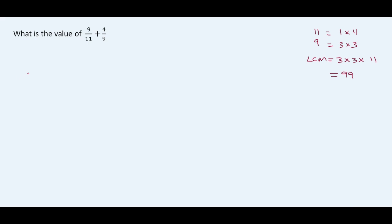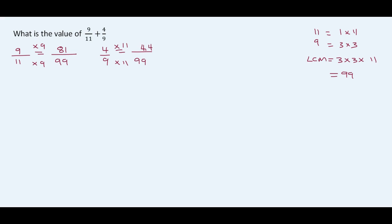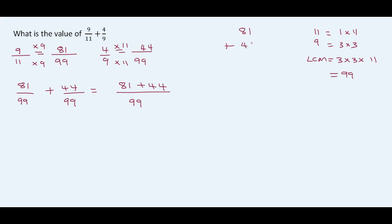Next step: rewrite each fraction with a new denominator of 99. We have 9 over 11 — we need a denominator of 99, so we multiply by 9 and multiply the numerator by 9 as well: 9 multiplied by 9 is 81. Then 4 over 9 — we multiply 9 by 11 to give us 99, and we multiply 4 by 11 as well, which gives us 44. So we now have 81 over 99 plus 44 over 99, giving a numerator of 81 plus 44.